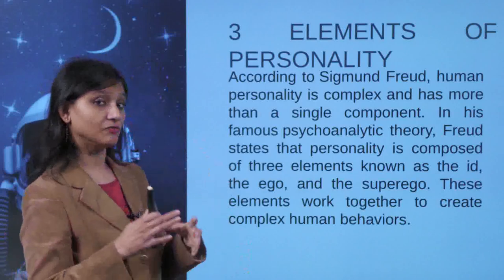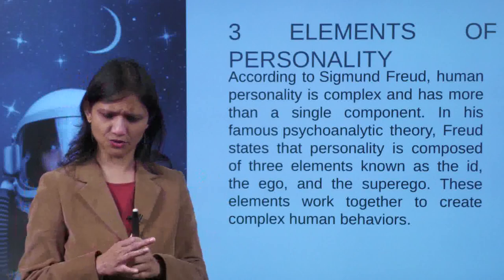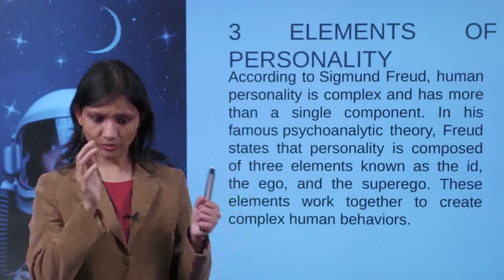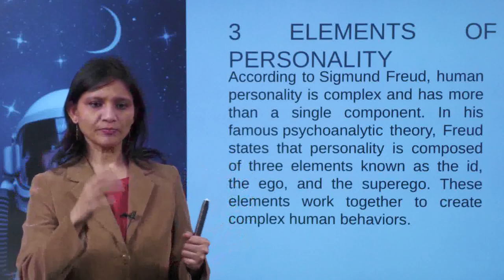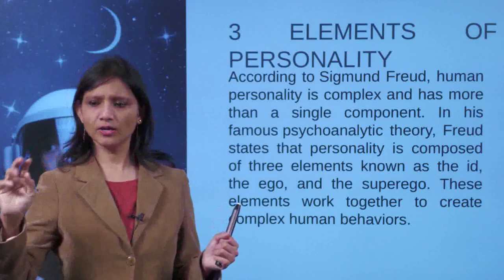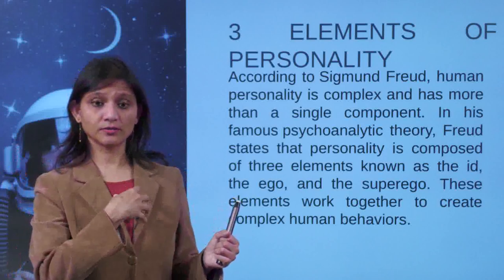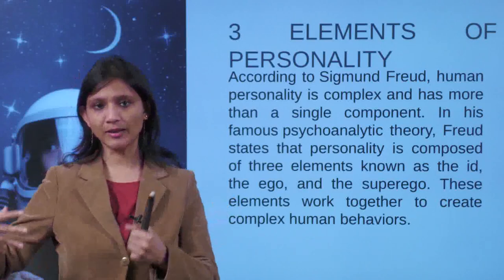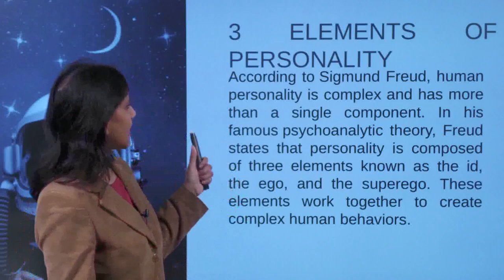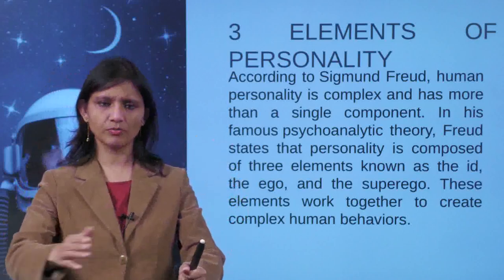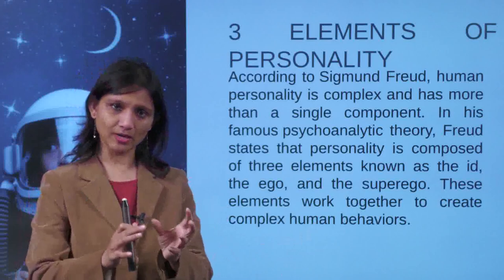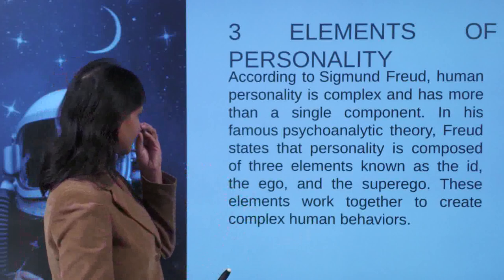According to Sigmund Freud, human personality is very complex. There were two gentlemen, Joe and Harry, who came up with the Johari Window — it talks about four windows: what I know and you know about me, what you know but I don't, and what neither of us knows, which is a blind spot. Such is the complexity of human personality — it has more than a single component. It's always a mix of many traits that form your identity.